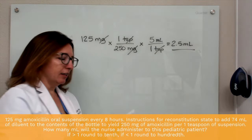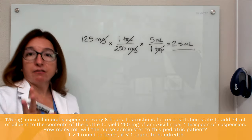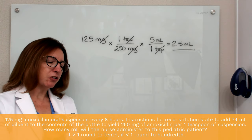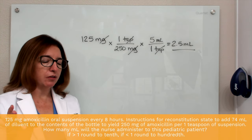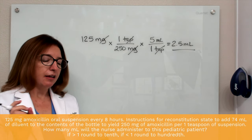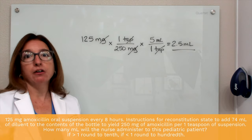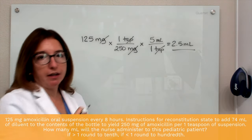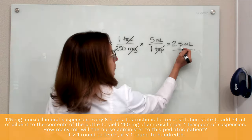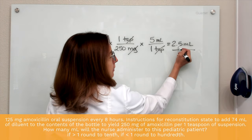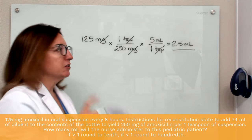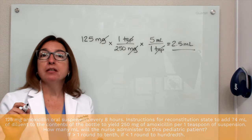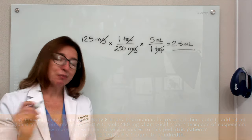Looking at the end of this question, it says if the answer is greater than one, round to the tenth; if less than one, round to the hundredth. We are over one and we are already rounded to the nearest tenth place. So we're all set — 2.5 milliliters will be administered to this patient.